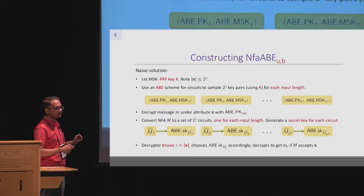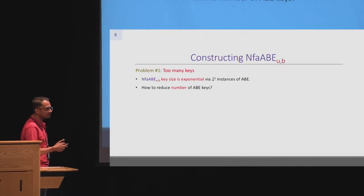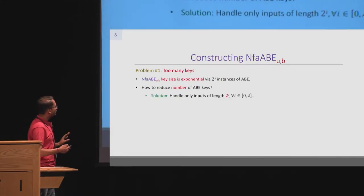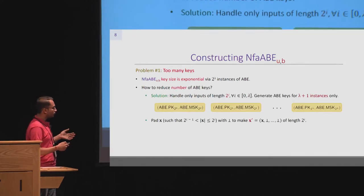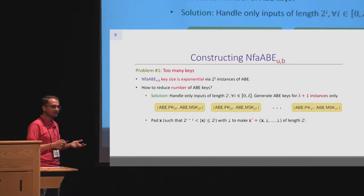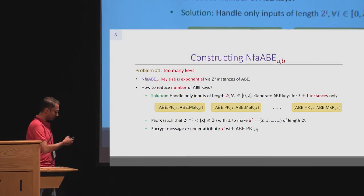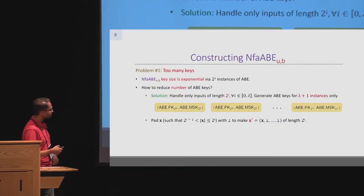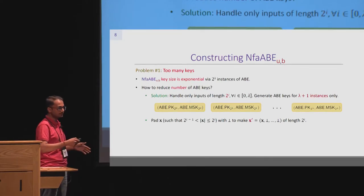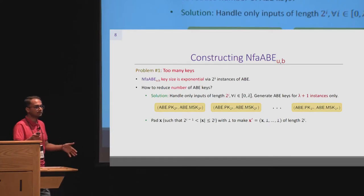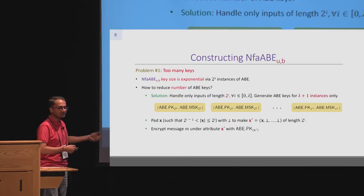The first problem is that the key size is exponential in the security parameter. To reduce this, we use a simple trick: handle attributes of length only 2^i. So instead of instantiating the ABE scheme 2^λ times, we instantiate it λ+1 times, each handling attributes of length 2^i. When an attribute arrives during encryption, we find the nearest power of 2 and pad with sufficient bots, then encrypt the message under this new attribute.